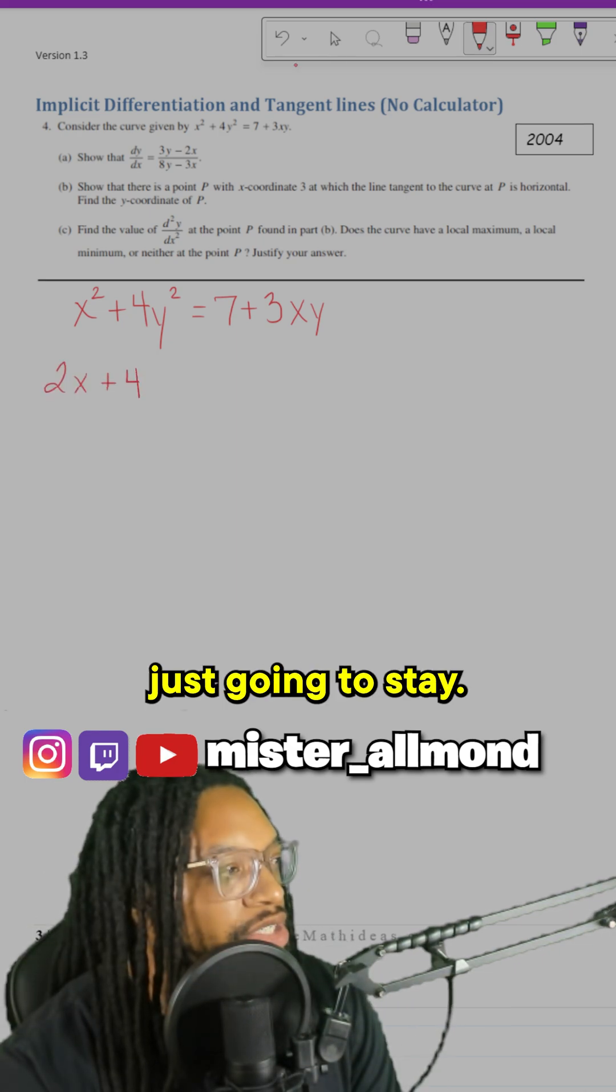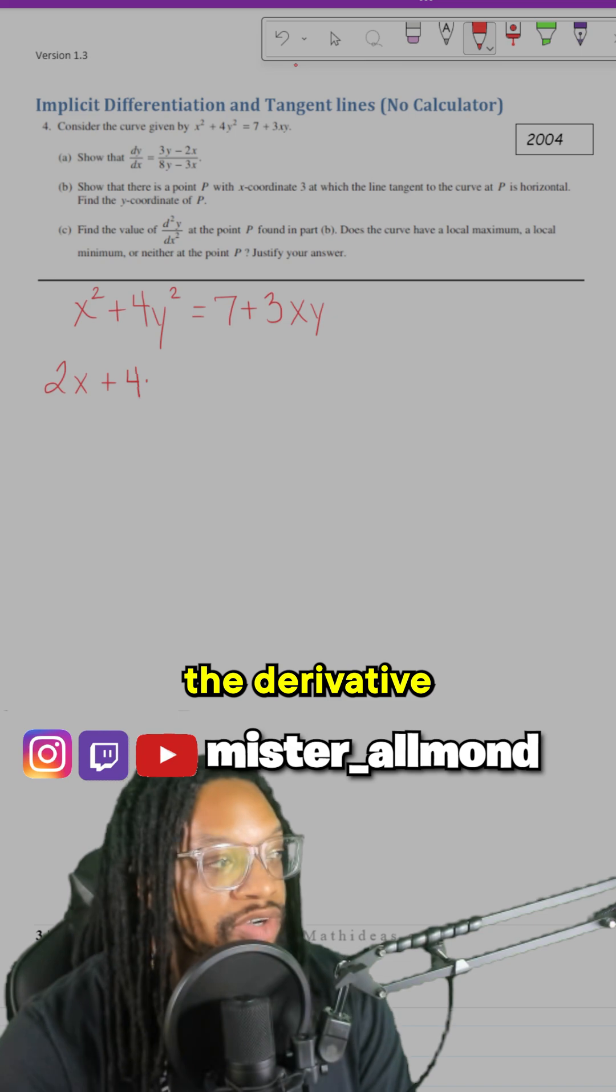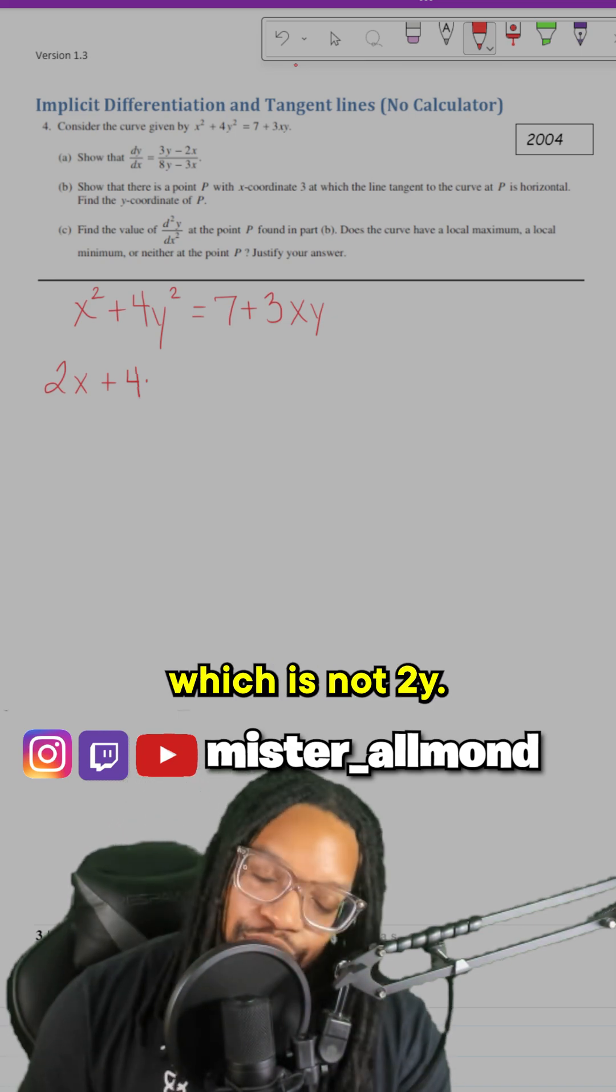So that 4 is just going to stay, and then I'm going to multiply that by the derivative of y squared, which is not 2y.